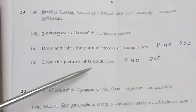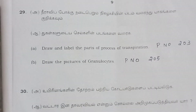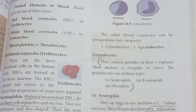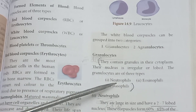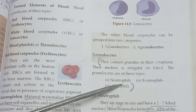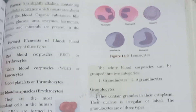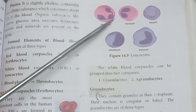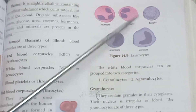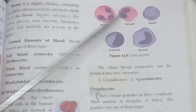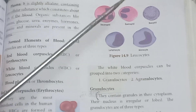Question 29 (part 2): Draw the pictures of granulocytes. Refer to page number 205. Granulocytes are a type of WBC — including neutrophils, eosinophils, and basophils. Draw the three diagrams: neutrophils, eosinophils, and basophils.